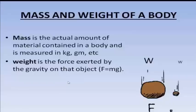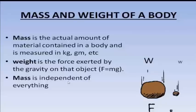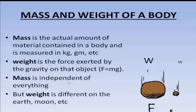Weight always includes mass and the acceleration due to gravity. If we take two exactly identical objects, they will have the same mass. But the difference will be in their weight if they are at two separate places — one on the earth and one on the moon or some other planet. Weight involves acceleration due to gravity, and acceleration due to gravity is different at different places. Mass is independent of everything — it is the matter contained in the body. But weight is different on earth and the moon because it involves acceleration due to gravity.